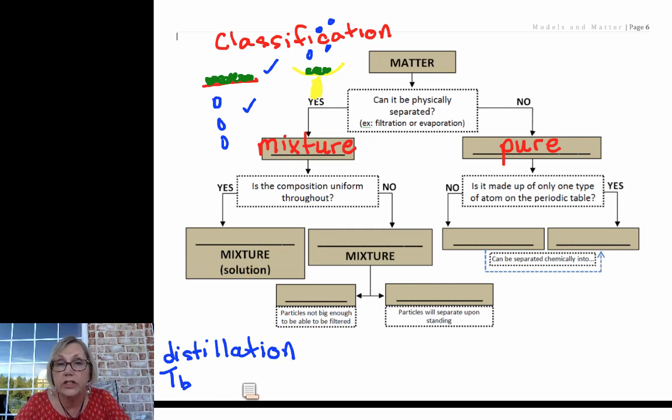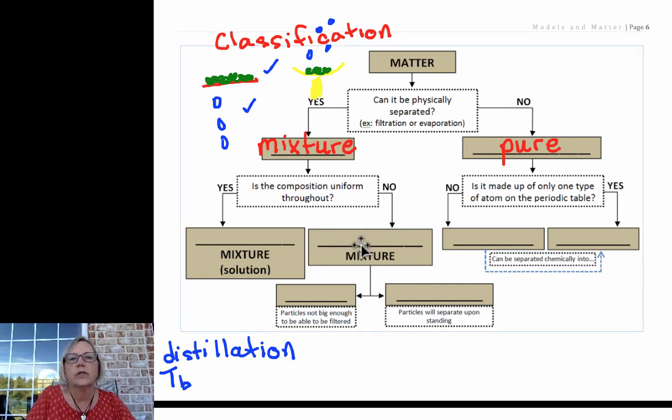Now with mixtures we want to further classify them based on how this mixture appears to us. If the mixture appears uniform throughout, so if it would be the same throughout, we would call that homogeneous—homo meaning same.